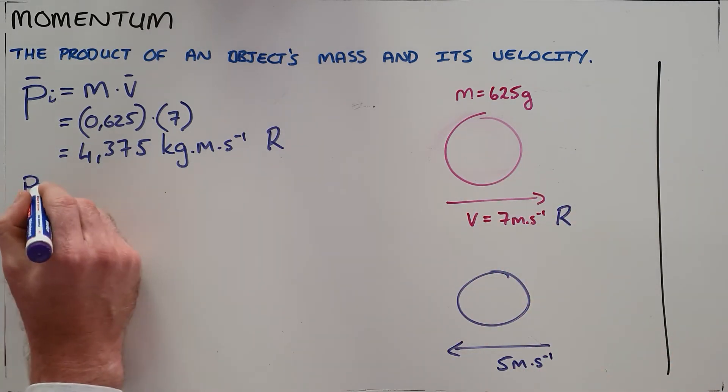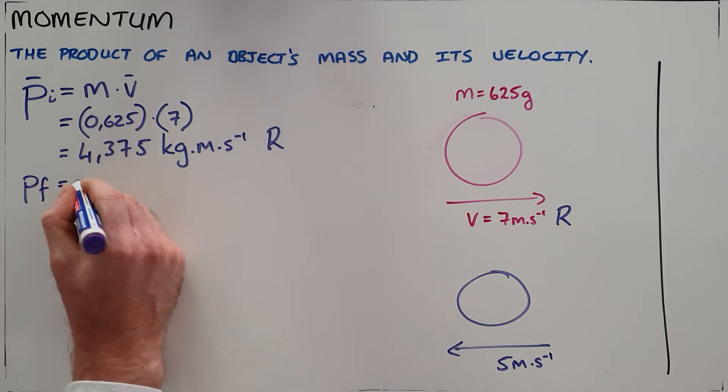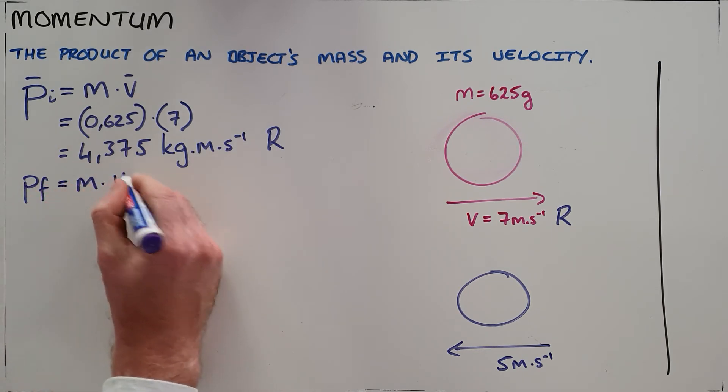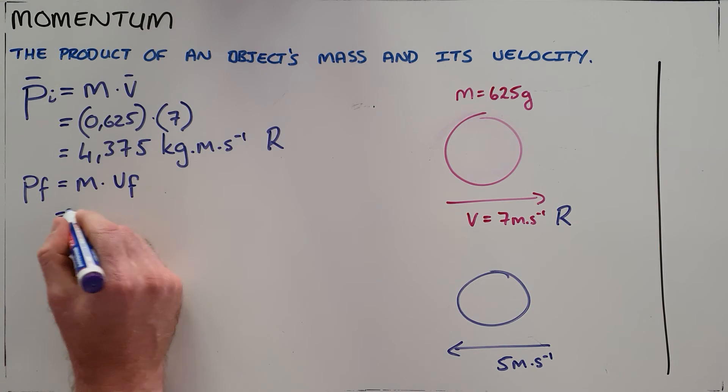So we can now calculate our final momentum, the momentum after this has occurred. And we follow the same formula. Final momentum is equal to the mass multiplied by the final velocity. The mass of this object has remained the same, also measured in kilograms.